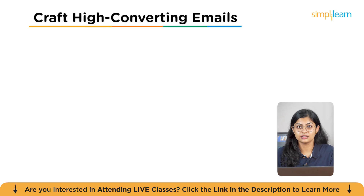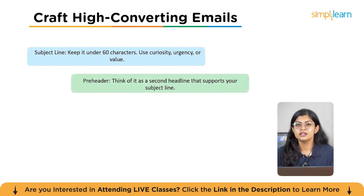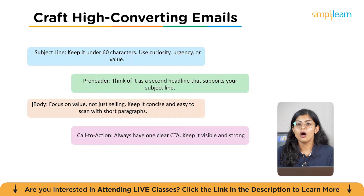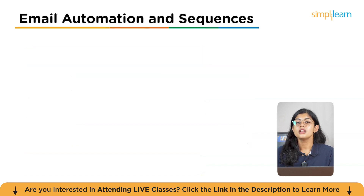To craft high-converting emails, follow these steps. Subject line: keep it under 60 characters and use curiosity, urgency, or value. Pre-header: think of it as a second headline that supports your subject line. Body: focus on value, not just selling — keep it concise and easy to scan with short paragraphs. Call to action: always include a clear CTA, kept visible and strong, like a button or link. Design: ensure your email is mobile-friendly with a clean, one-column layout. Pro tip: A/B test your subject lines and CTAs regularly to see what works best.